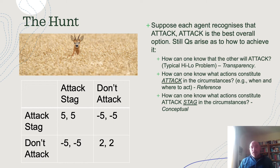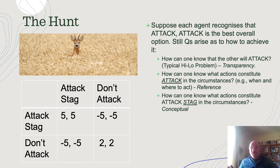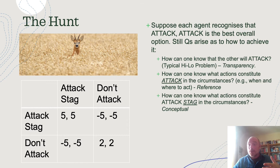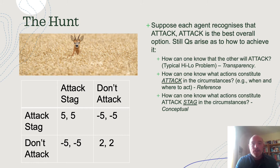It strikes me as fairly obvious that joint attention is going to have some kind of role to play in these circumstances, and that role is multifarious. First, it allows the agents to identify the object in front of them — at least to see that the stag is there, giving them awareness of its spatio-temporal location. Second, it allows them to be aware that they're each aware of that stag's spatio-temporal location. Third, it allows them to understand that the object they see before them is a stag — it's only via seeing it that they can actually know that.